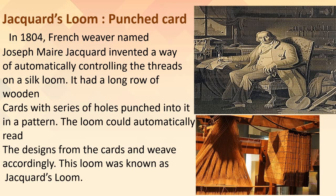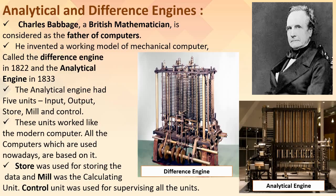Jacquard's Loom Punch Card. In 1804, French weaver Joseph Mary Jacquard invented a way of automatically controlling the threads on a silk loom. It had a long row of wooden cards with a series of holes punched into them. The loom could automatically read the designs from the cards and weave accordingly. This loom was known as Jacquard's Loom.